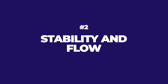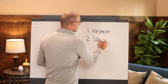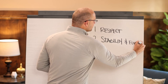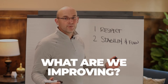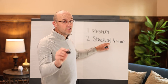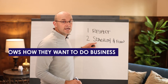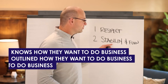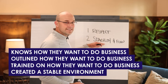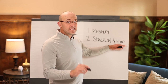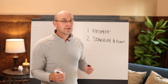Principle number two is stability and flow. I love this concept, and it goes back to the question I asked: what are we improving? Well, if you are improving a stable environment — meaning the company or the project site knows how they want to do business, has outlined it, trained on it, and created a stable environment that flows with a takt production system — then that is an environment that you can improve.